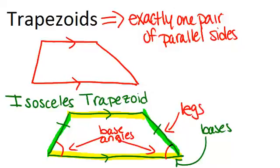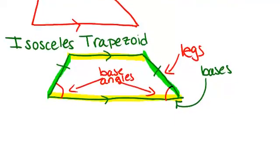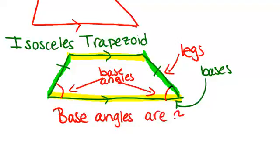In an isosceles trapezoid, the base angles will always be congruent. Also, the diagonals will be congruent to each other.